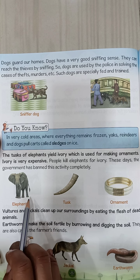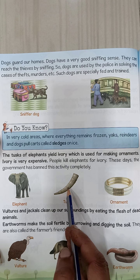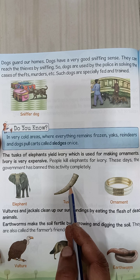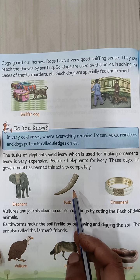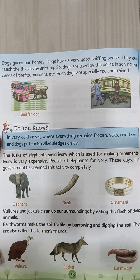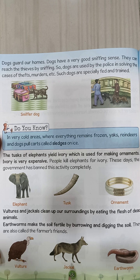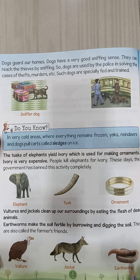The tusks of the elephant provide ivory, which is very expensive and used for making ornaments. People used to kill elephants for ivory, but nowadays the government has banned this activity permanently. Vultures and jackals clean up our surroundings by eating the flesh of dead animals. The earthworm is called the farmer's friend because it makes the soil fertile by digging and burrowing in the soil.